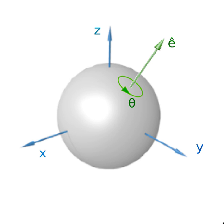Rotation in mathematics is a concept originating in geometry. Any rotation is a motion of a certain space that preserves at least one point. It can describe, for example, the motion of a rigid body around a fixed point.